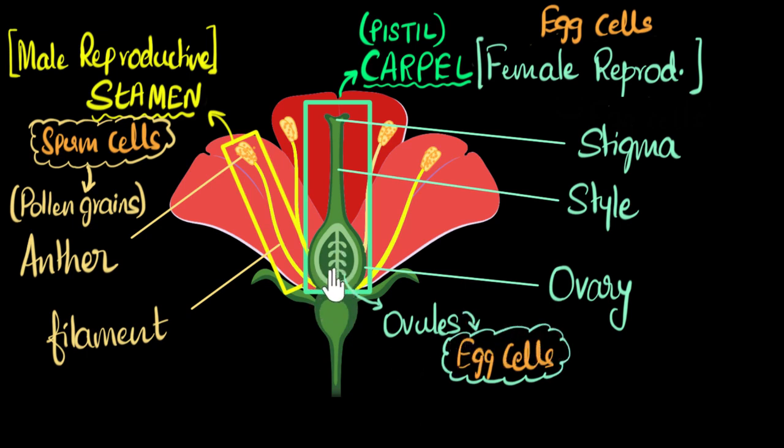So if you have more than one ovules, if a flower has more than one ovules, as you can see over here, each ovule will have an egg cell. And so you can kind of see now how far away the sperm cells are from the egg cells. For reproduction to happen, they have to fuse.